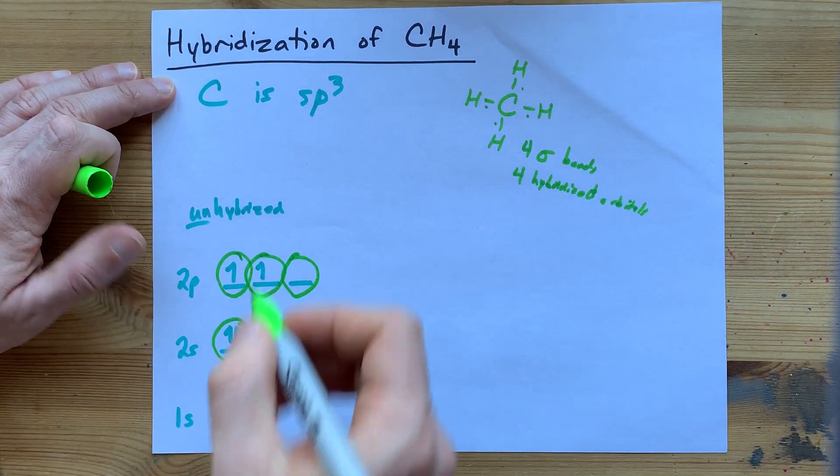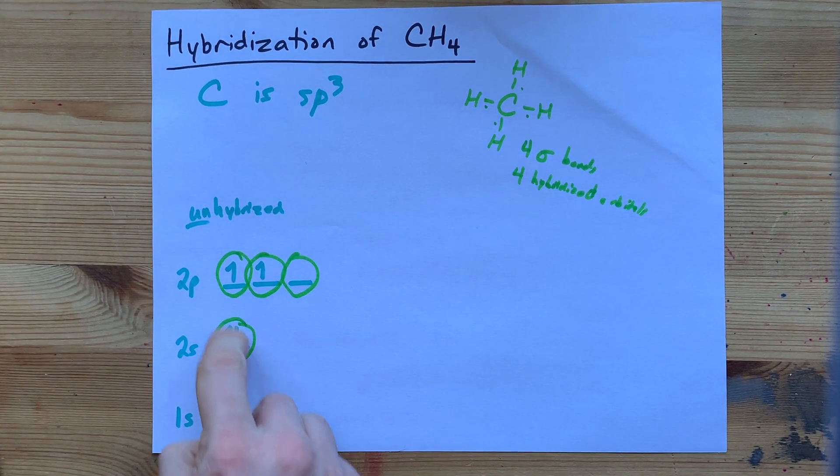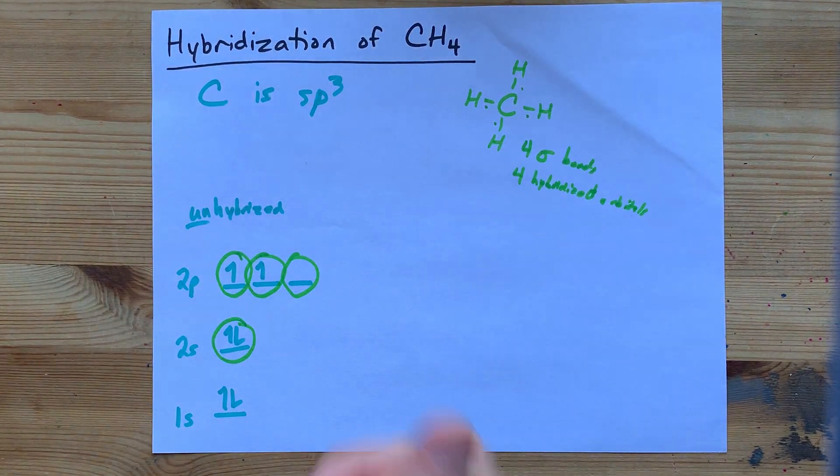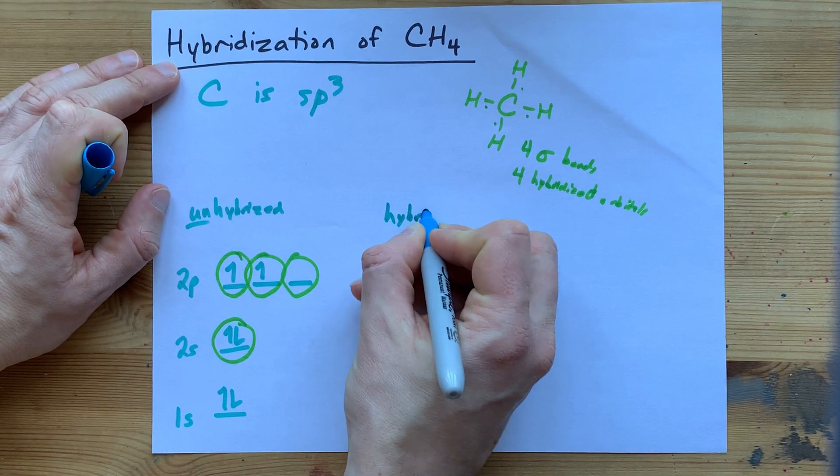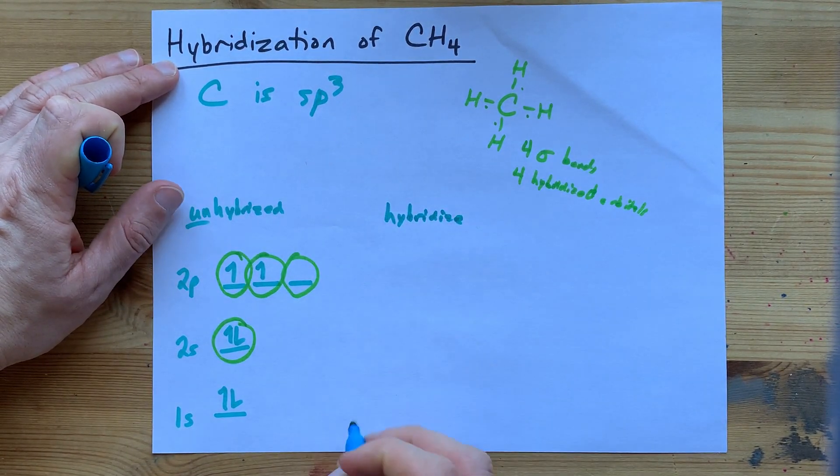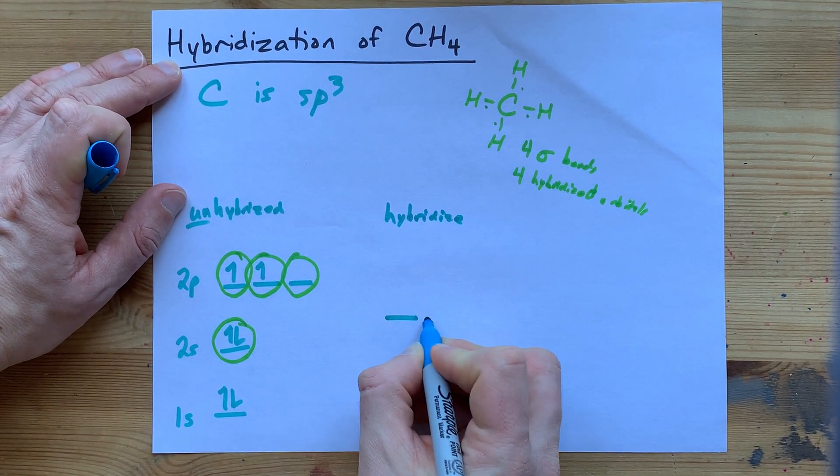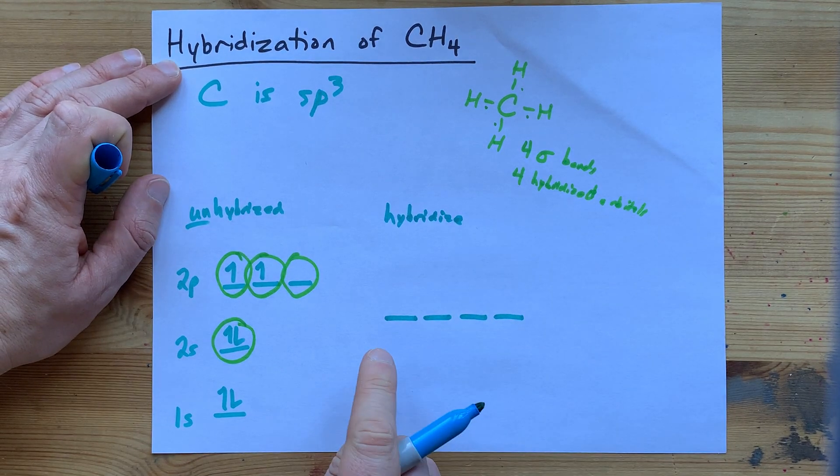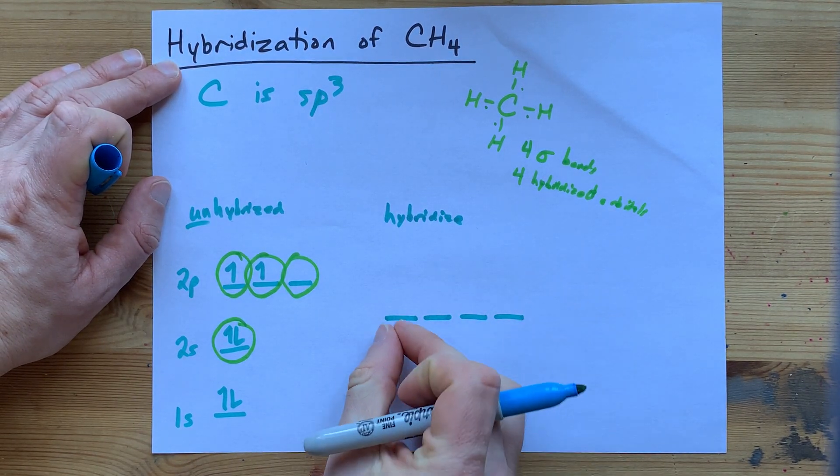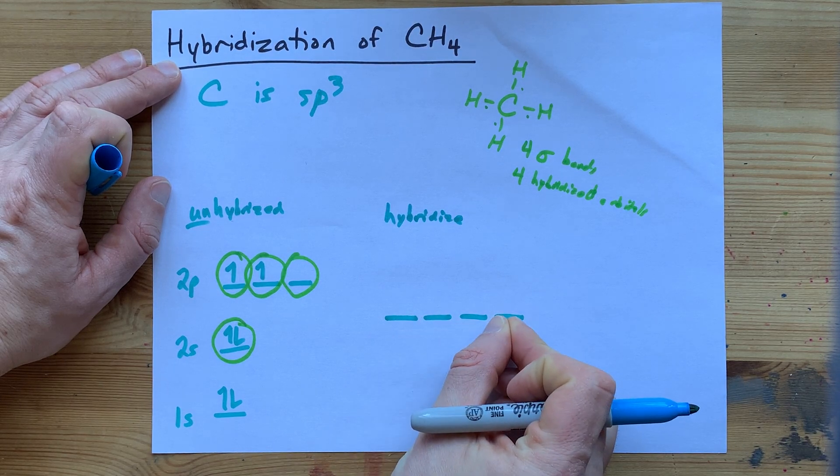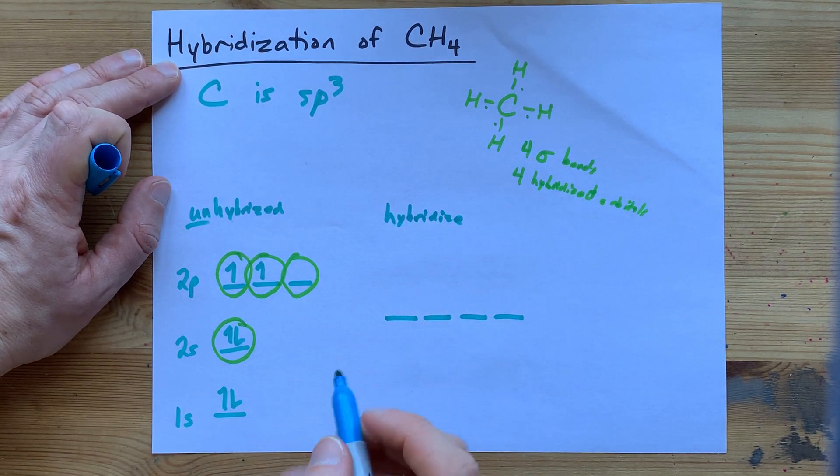Four atomic orbitals will hybridize to make four degenerate, a.k.a. equivalent energy, hybridized orbitals.